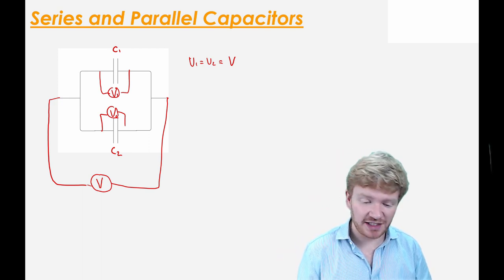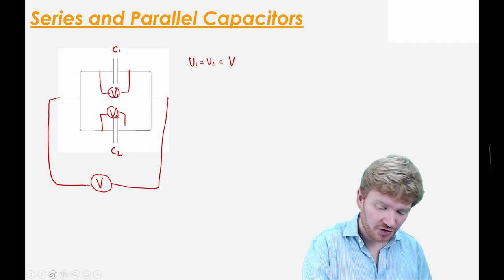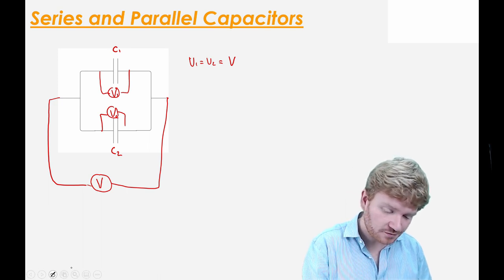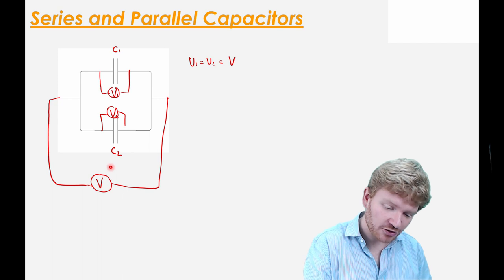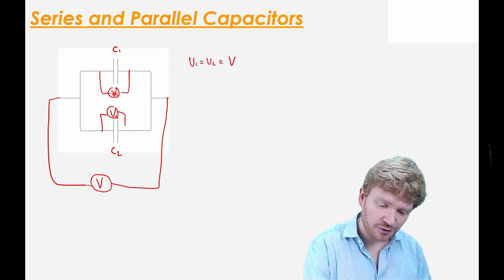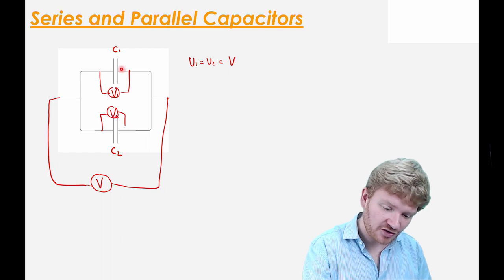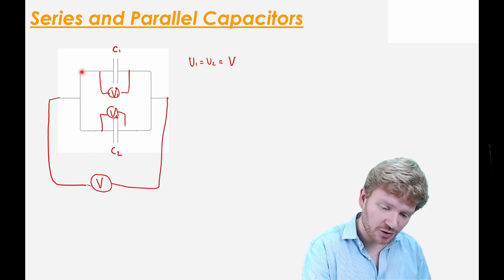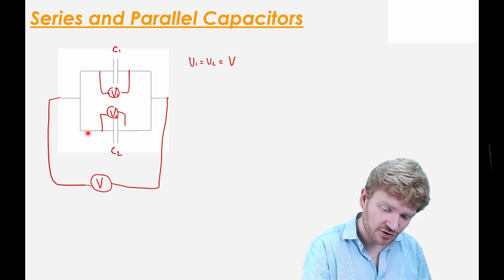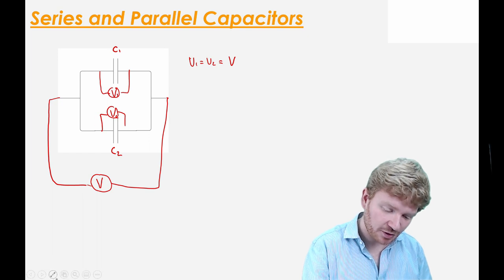That should be fairly clear from Kirchhoff's second law, where we say the sum of the EMF around a closed loop is equal to the sum of the voltages. Thinking around this closed loop — I have no EMF, so whatever I gain through one I must lose through the other. Around that loop, they must both have the same voltage.